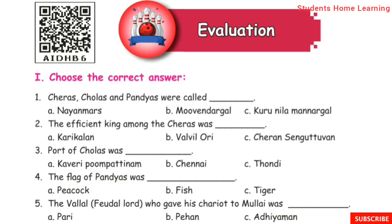Evaluation. Roman Letter 1: Choose the Correct Answer. First one: Cheras, Cholas and Pandyas were called Dash.